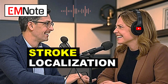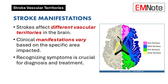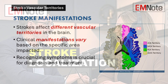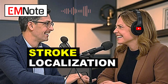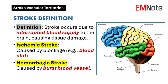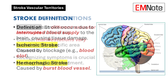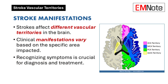Welcome, everyone, to our deep dive today. It's all about stroke vascular territories, and specifically, we're going to be talking about how the location of a stroke can actually determine the symptoms that a patient experiences. Strokes occur when blood flow to a part of the brain is blocked, and different arteries supply different brain regions, leading to a variety of clinical presentations.